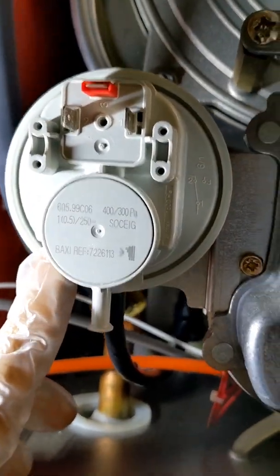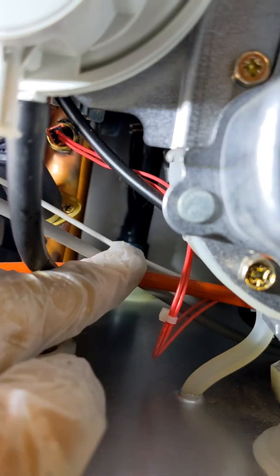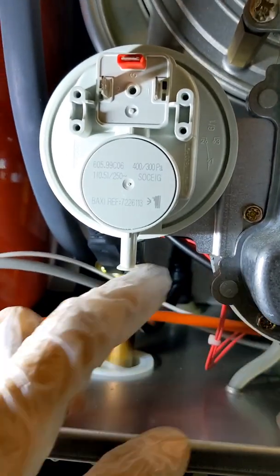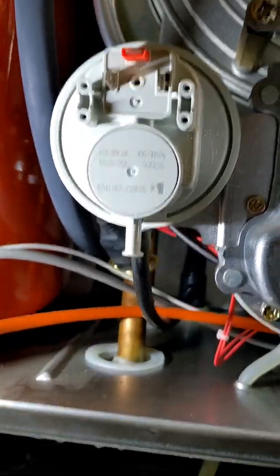Now this air pressure switch, if you look at this hose, goes back onto the condensate trap. So I'm suspecting possibly a blocked condensate, which is stopping this from giving us continuity.